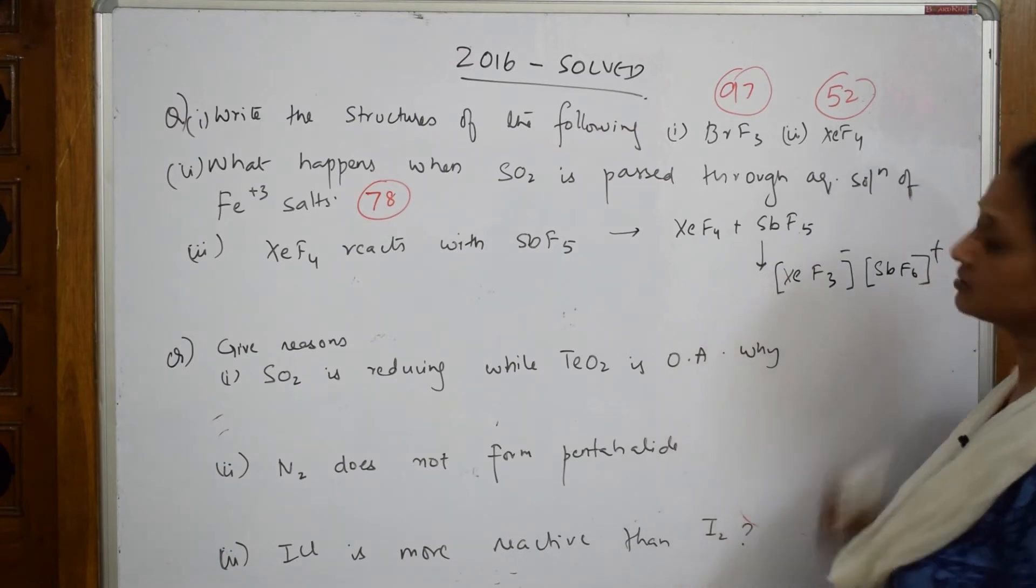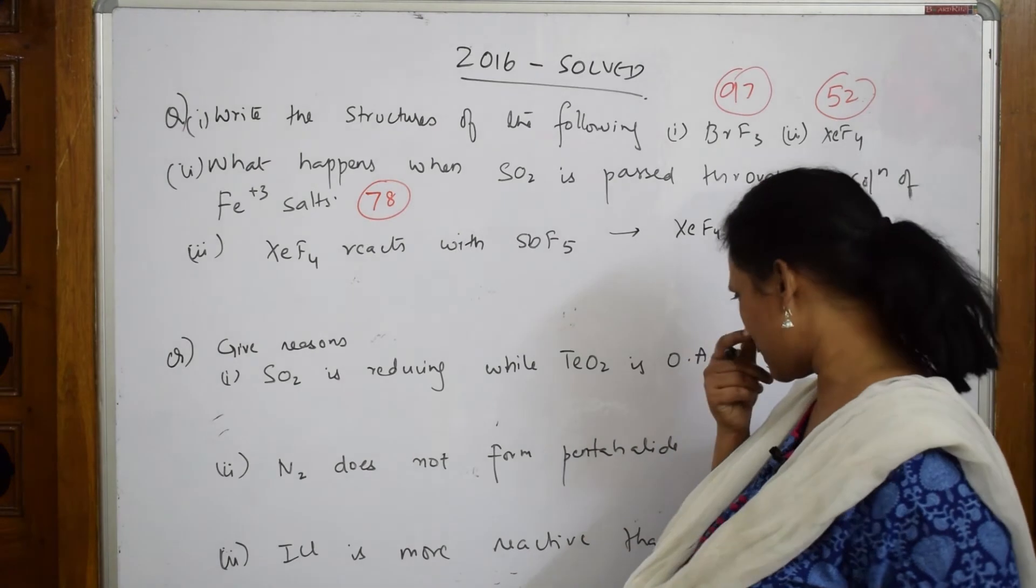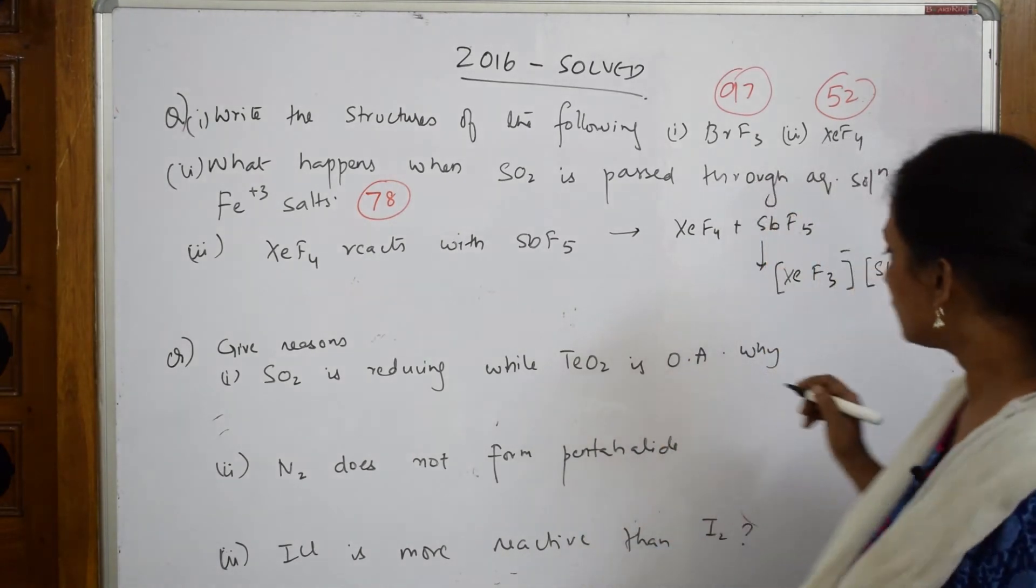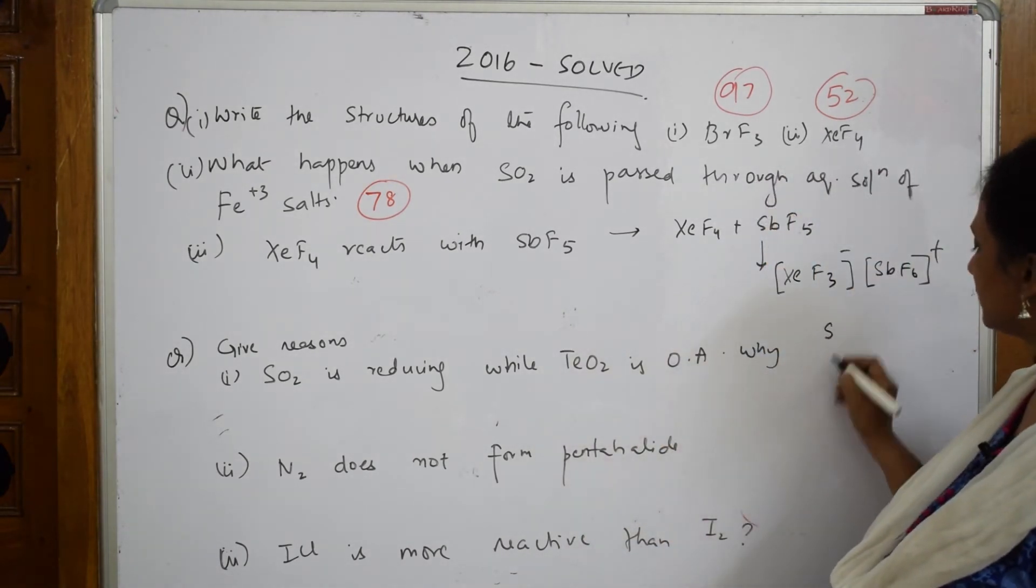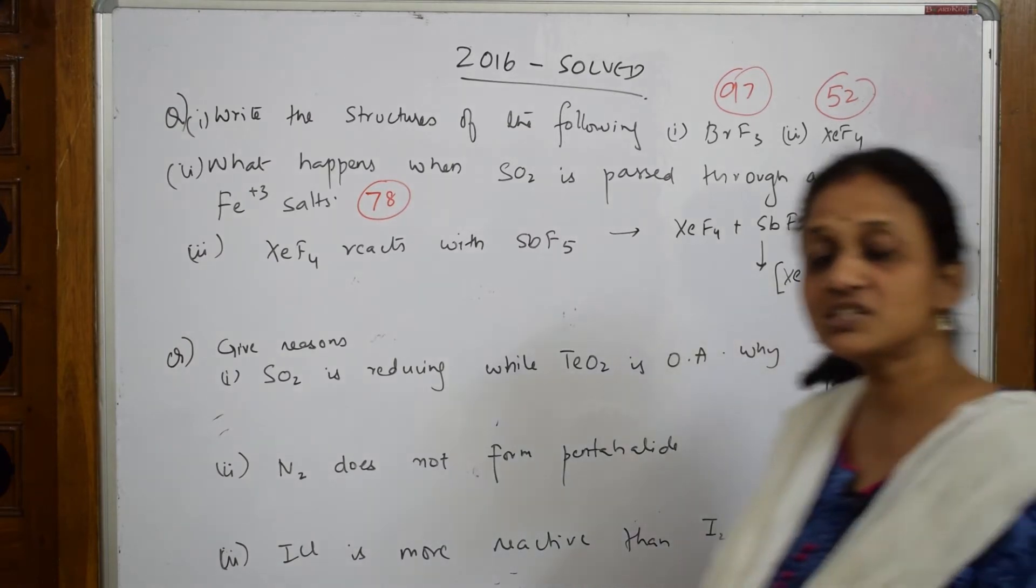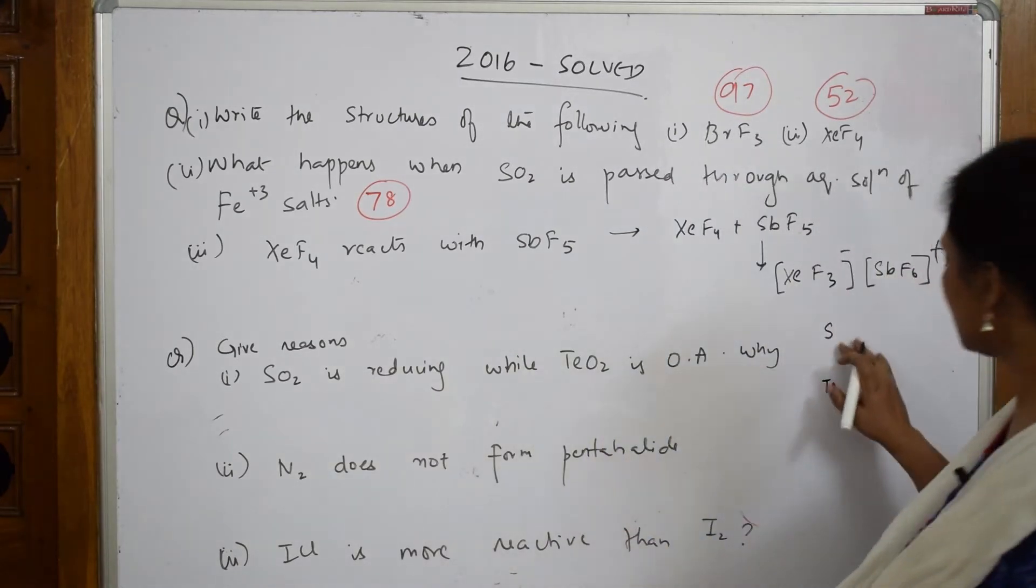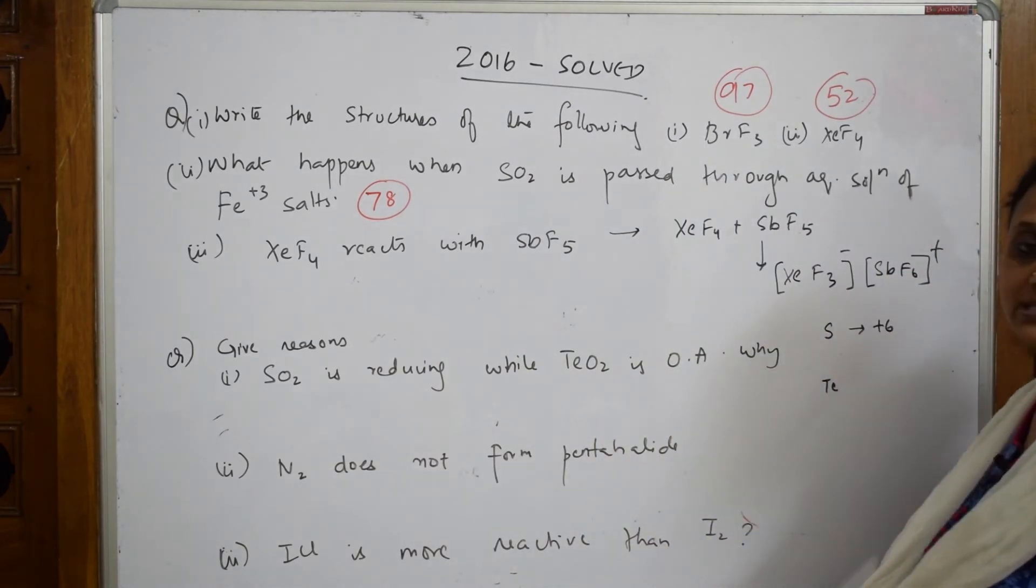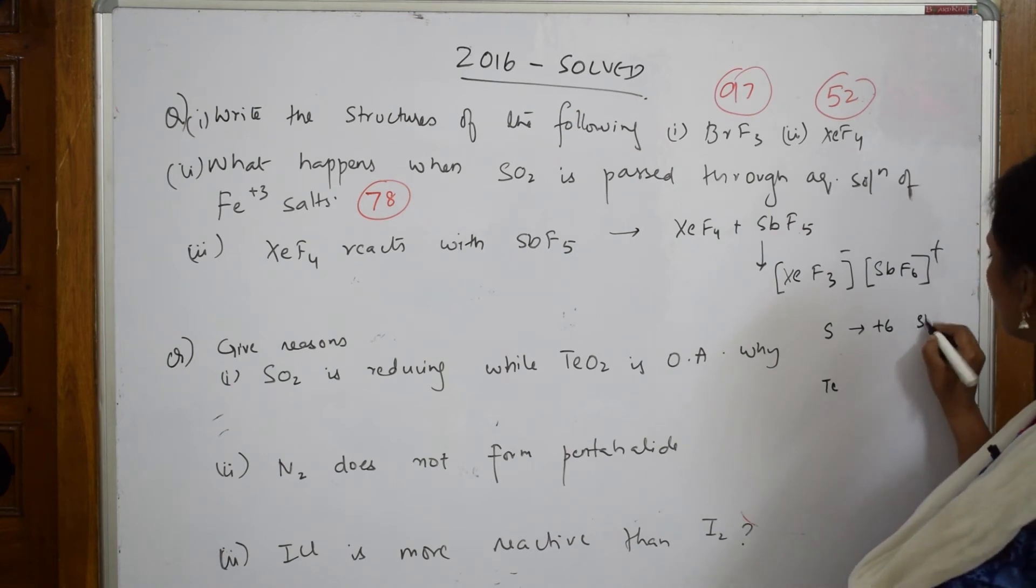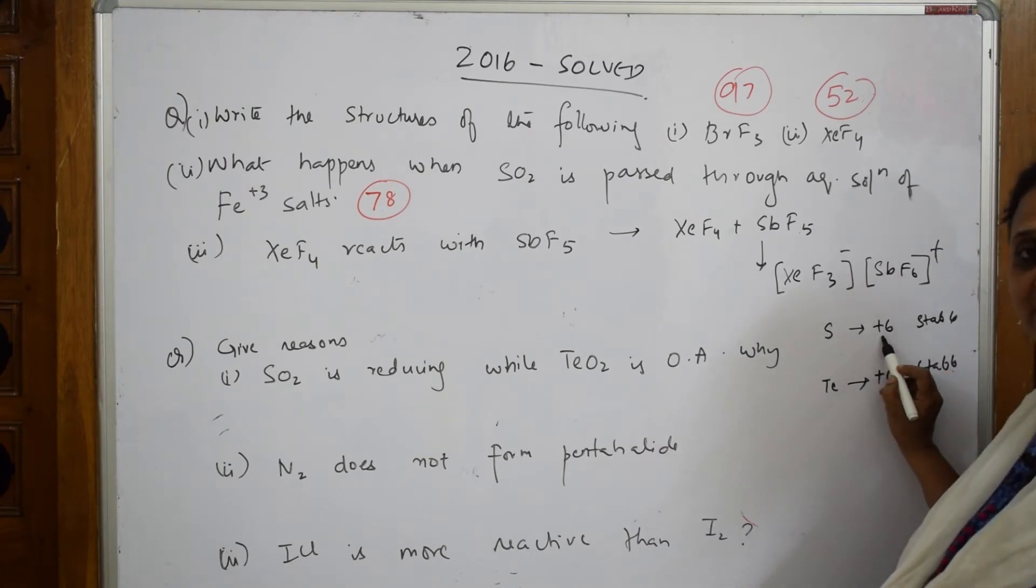SO2 is reducing while TeO2 is oxidizing. When I have to see from sulfur to tellurium, when I go down the group, which oxidation state is more stable, higher or lower? When I see sulfur-oxygen, the stable oxidation state is +6. In tellurium, the stable oxidation state is +4.